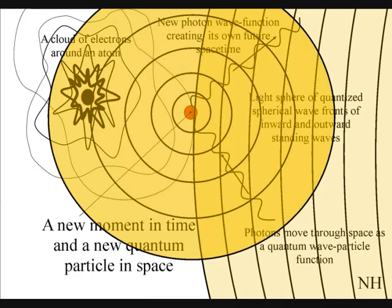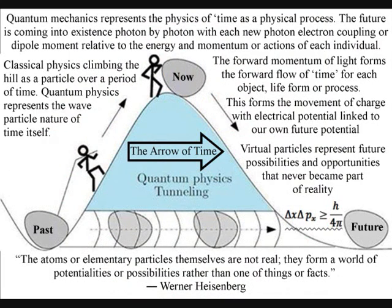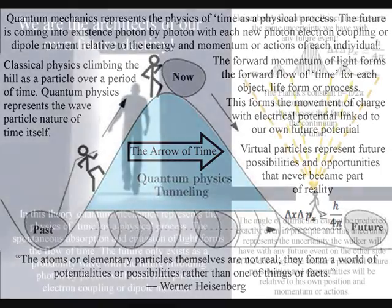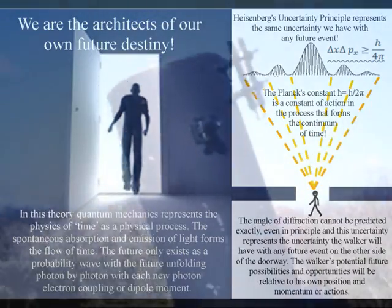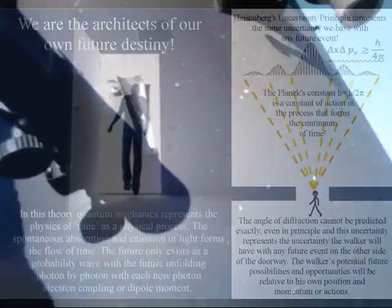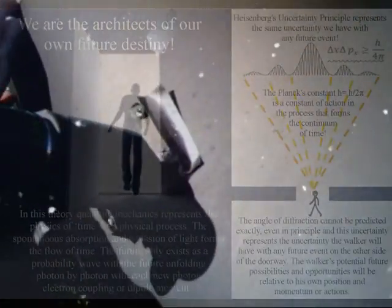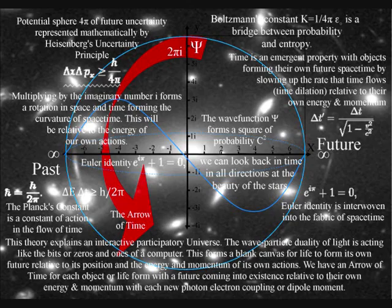We have an infinite number of reference frames within our universe, and because light has momentum and momentum is frame dependent, each object or observer will have their own reference frame with their own future uncertainty as time unfolds photon by photon. Therefore, an observer can look back in time at the beauty of the stars in all directions from the center of their own reference frame. This is because they are forming their own space-time by collapsing the waves of light into new photon oscillations, forming their own future potential.